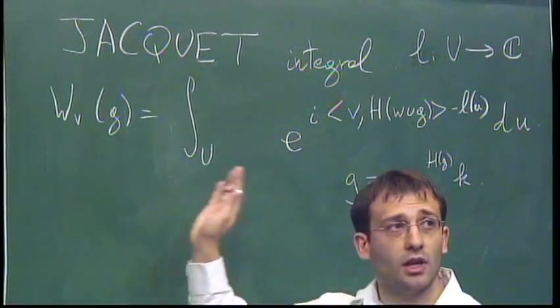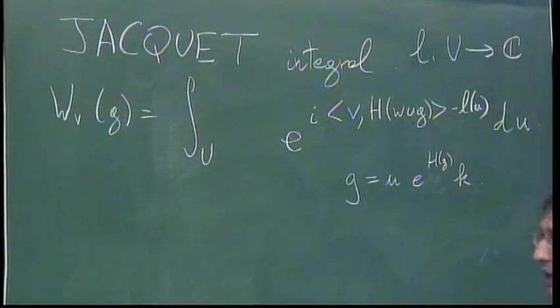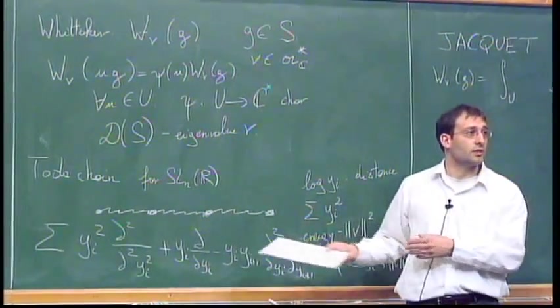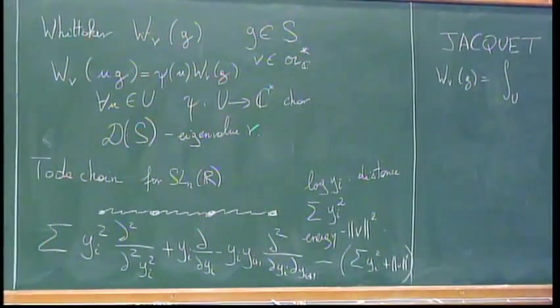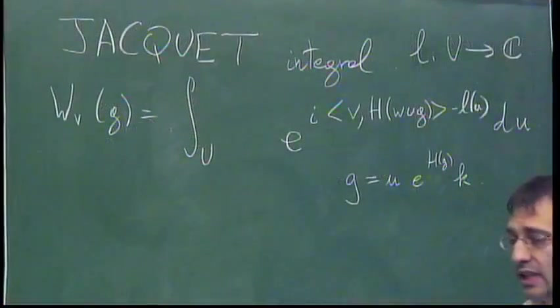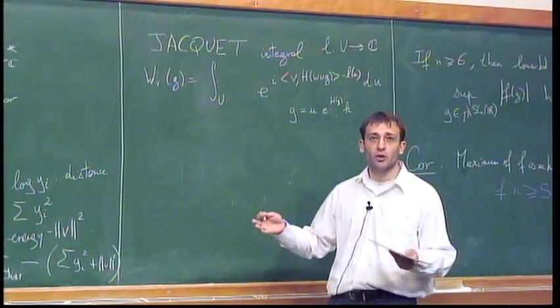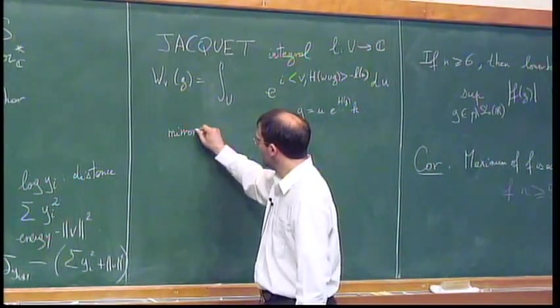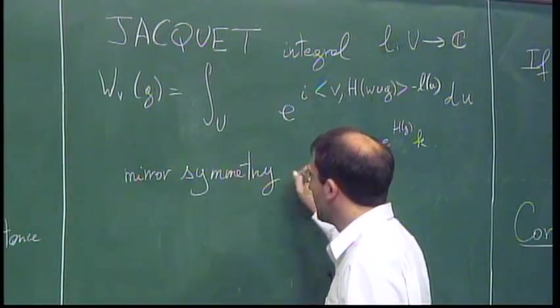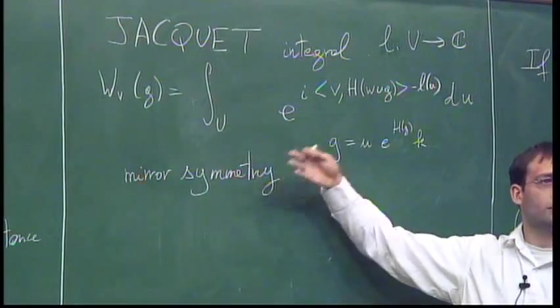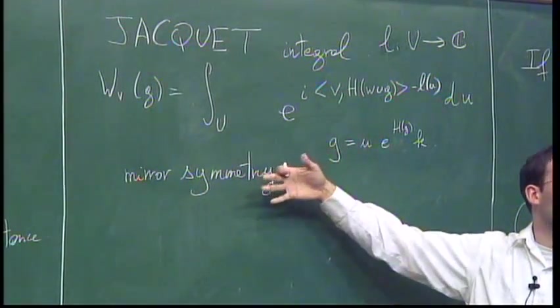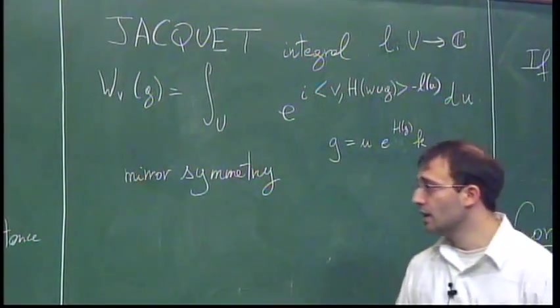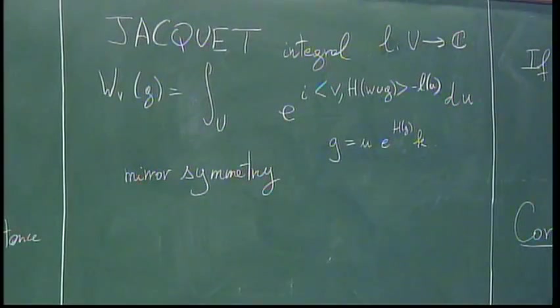So let me write it for you. So W_ν(g) you integrate over this unipotent so you would do this in order to create this equivariance. So I want ψ(u) bar du. Right so in fact I will write it so this ψ(u) bar I will write it in exponential form, so it's a unitary character so let me write it as exponential i·l where l is a linear form. So l goes from U to C. And then I will write it schematically as exponential i·μ·h(w·u·g) - l(u) du. That's essentially the integral.